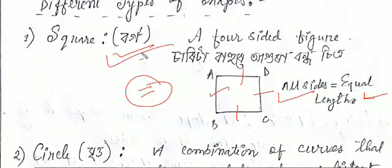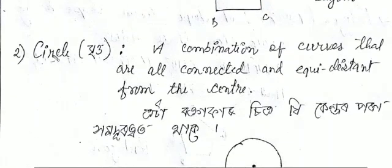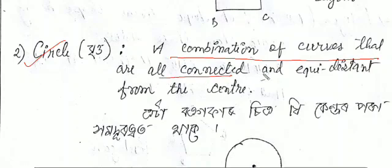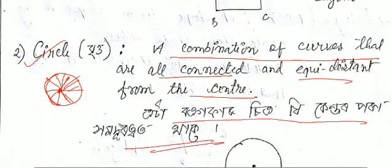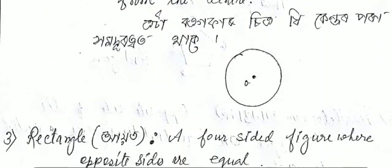Next is the circle. The circle is a combination of curves that are all connected and equidistant from the center.